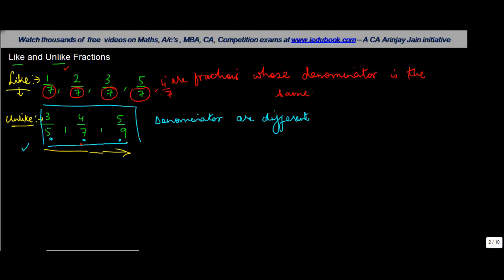So let's say I had this set of fractions which are unlike. Now I want them to be converted into like fractions. Now how do you do that? The process is very simple. Basically what you do is you find out the LCM of all denominators.